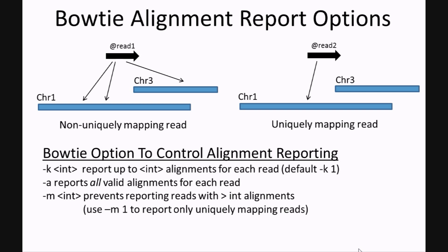To only have uniquely mapping reads reported, set m to one. And lastly, the -S option will have Bowtie output read alignments in the SAM format. This is the option that you should be using when running Bowtie.